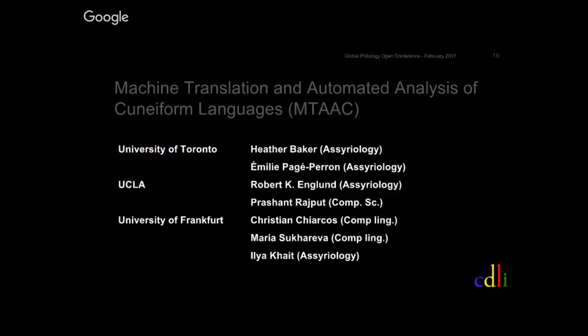An audience member asked whether the database includes Ugaritic texts. The presenter responded that there are just a couple of texts right now, but a French scholar named Vanessa is preparing some edited content. The major texts in the database are mostly Sumerian and Akkadian texts.